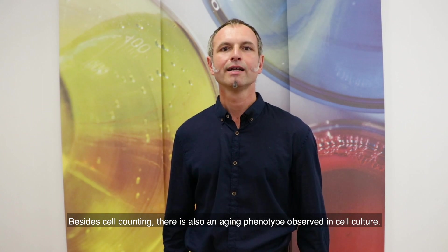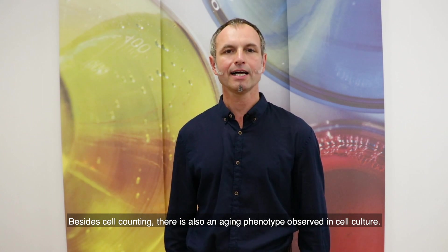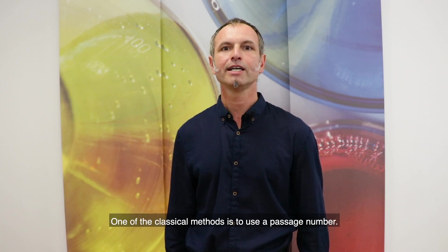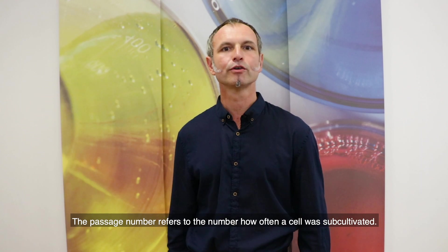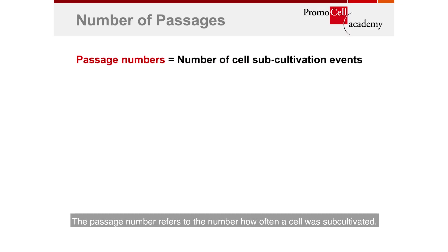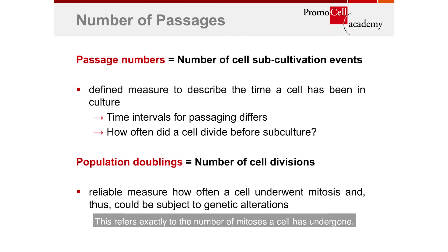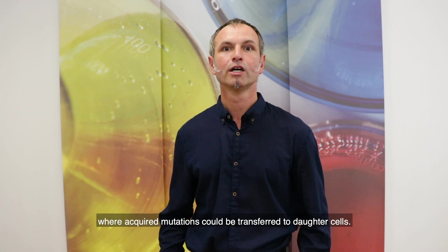Besides cell counting, there is also an aging phenotype observed in cell culture, so it is important to know how long cells have been in culture. One classical method is to use a passage number, which refers to how often a cell was sub-cultivated. However, this is a restricted measurement as it does not account for days between sub-cultivations. A more accurate measure is population doublings, which exactly reflects the number of mitoses a cell has undergone and how many events could transfer acquired mutations to daughter cells.